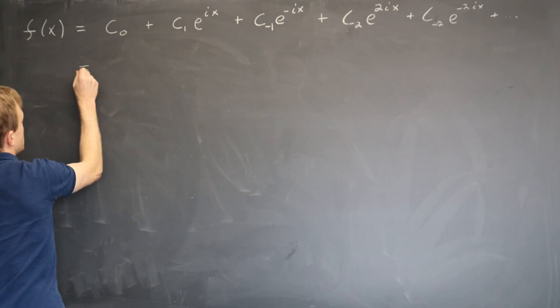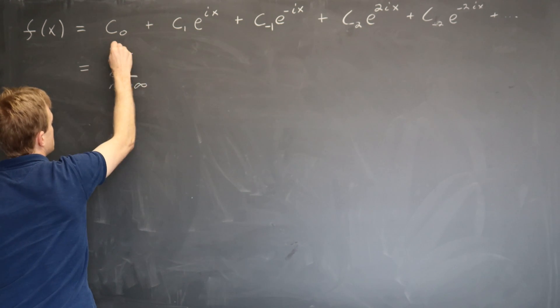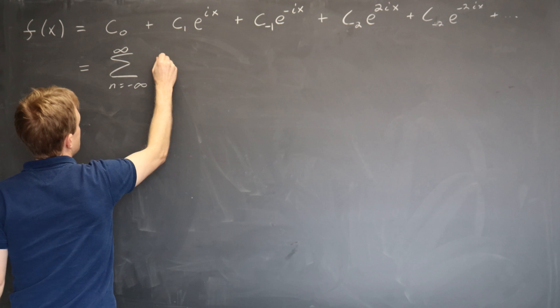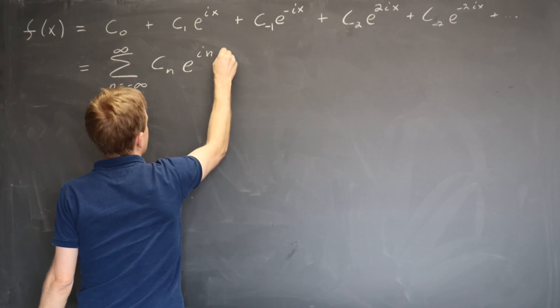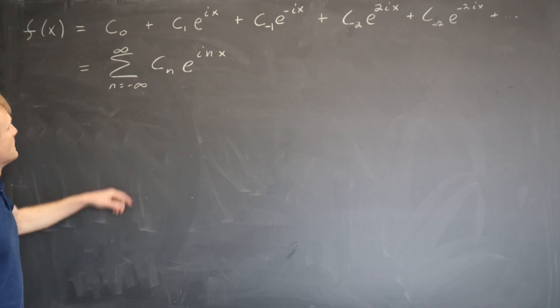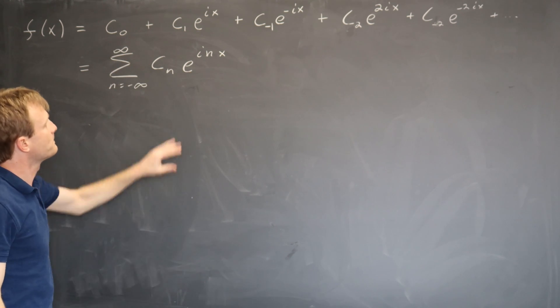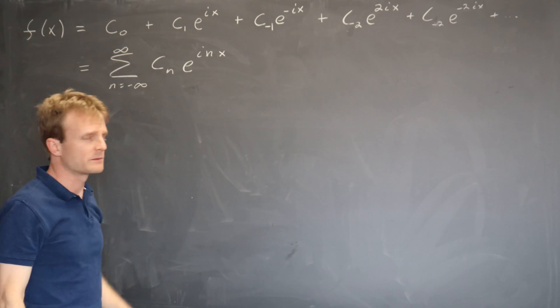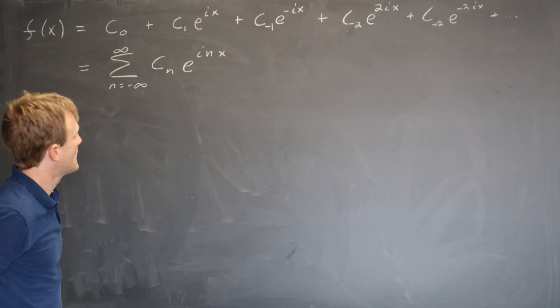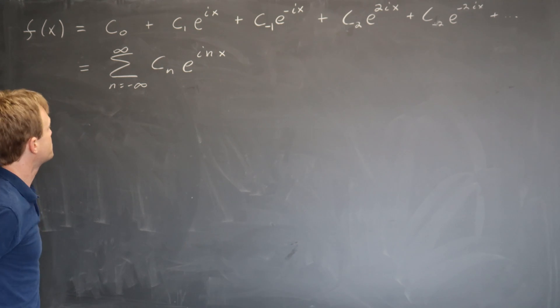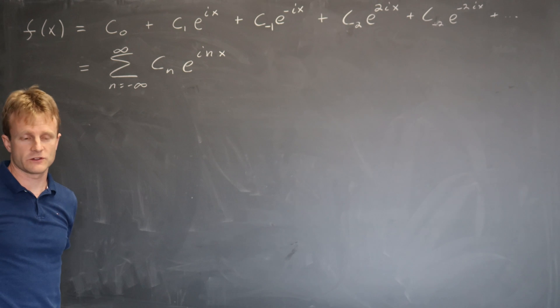So if you like, we can write it as the sum from n equals minus infinity to infinity of c sub n e to the i n x. Which gets the c0 term because e to the 0 is just 1 and all the other terms are up there explicitly. So this is our ansatz and now we need to figure out how to find a formula for the c sub n given knowledge of the function f.